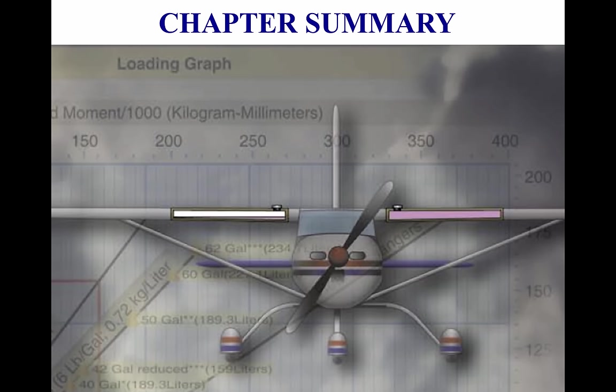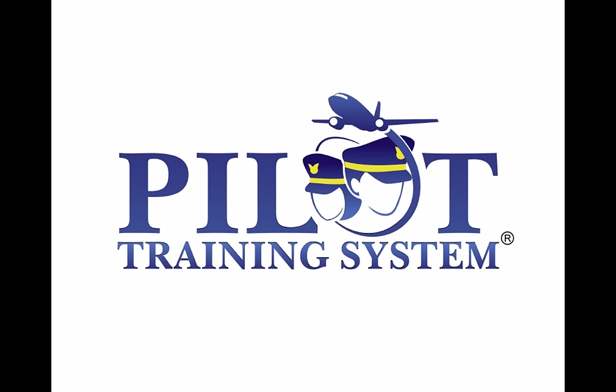Operating an aircraft within the weight and balance limits is critical to flight safety. Pilots must ensure that the CG is and remains within approved limits for all phases of a flight. Additional information on weight, balance, CG, and aircraft stability can be found in FAA-H-8083-1, Aircraft Weight and Balance Handbook. Pilots flying helicopters or gyroplanes should consult the Rotorcraft Flying Handbook, FAA-H-8083-21, for specific information relating to their aircraft type. This concludes the introduction to weight and balance.